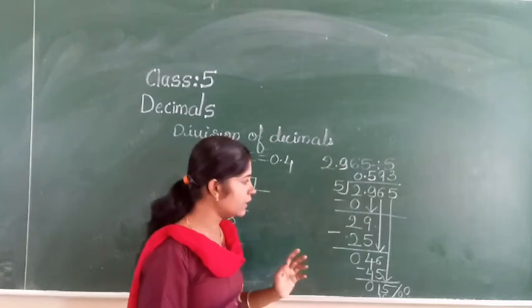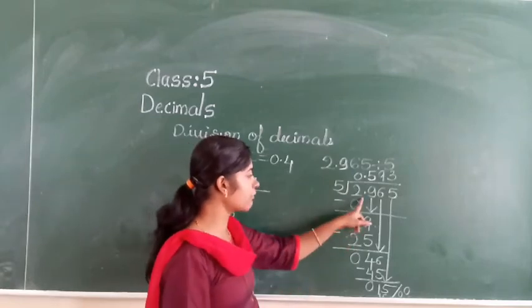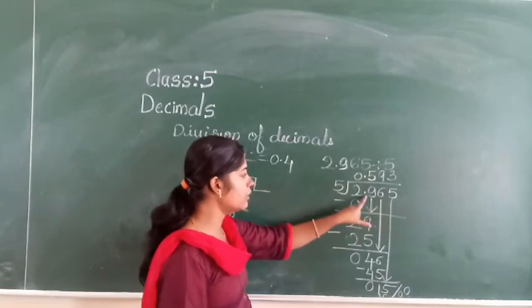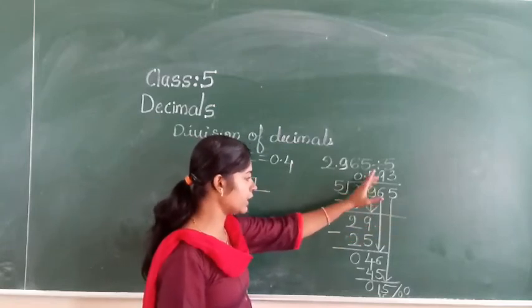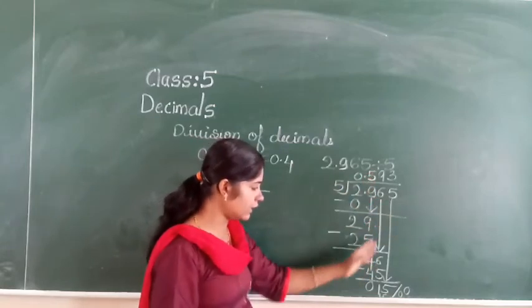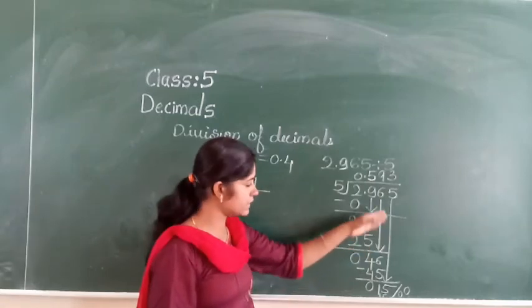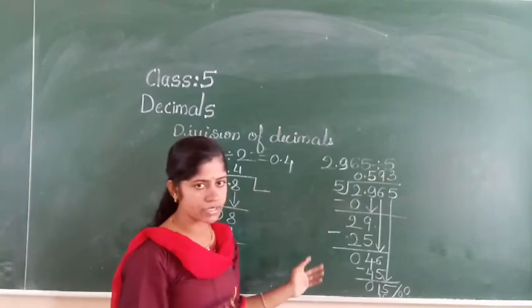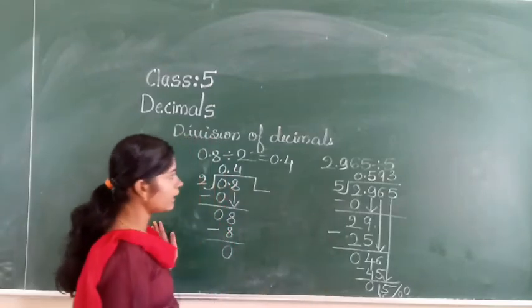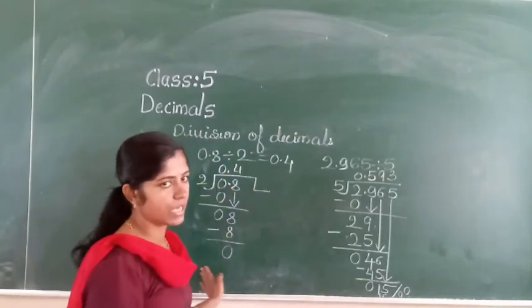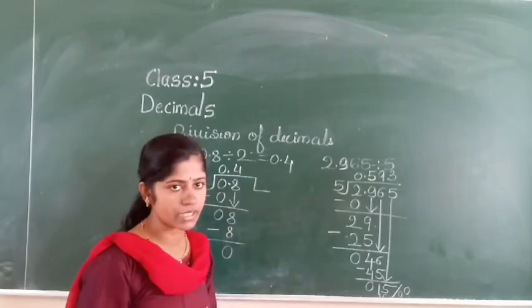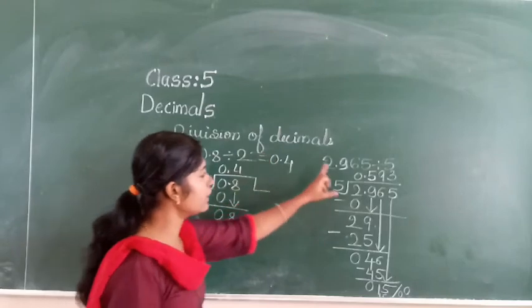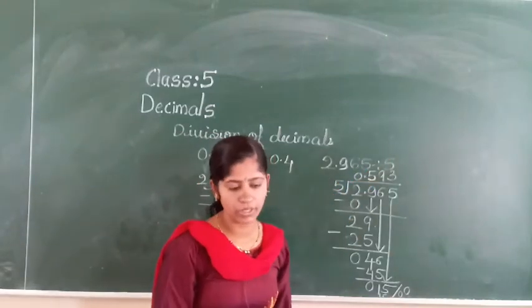That is very very important. When you are taking digits after the point, you must and should give the point in the quotient first, then take the after-point digits one by one down. This is how you solve these examples. I taught this in the previous class. In today's class, you have divided a decimal by a whole number. Now in today's class you are going to learn how to divide a decimal by a decimal.